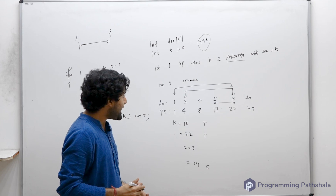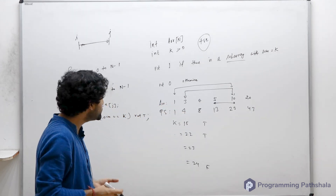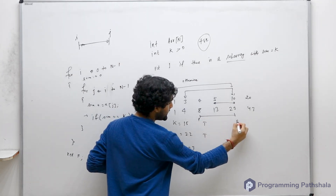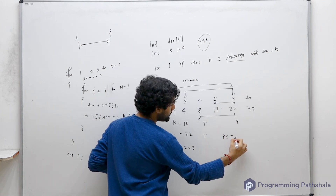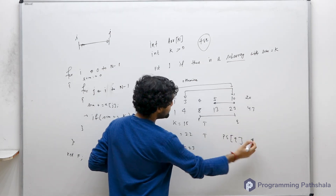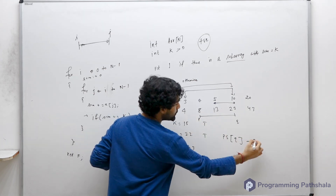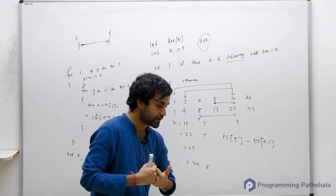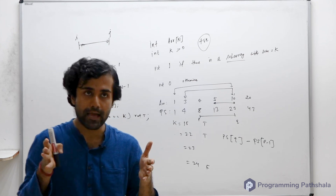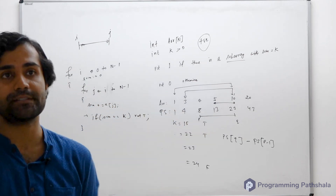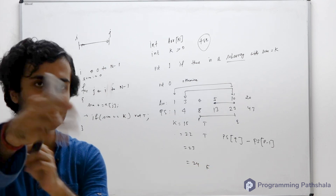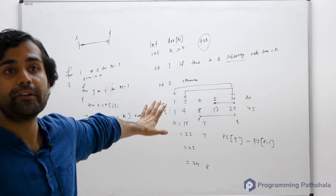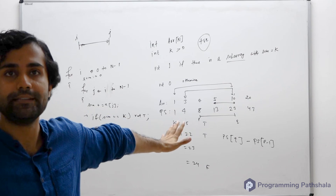Once you have the prefix sum, the sum from index p to q is: prefix_sum[q] - prefix_sum[p-1]. Now you have to figure out whether there is a subarray with a particular sum. What time complexity can you achieve using prefix sum? The prefix sum is ready — what will you do next?